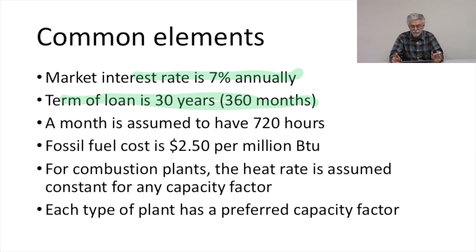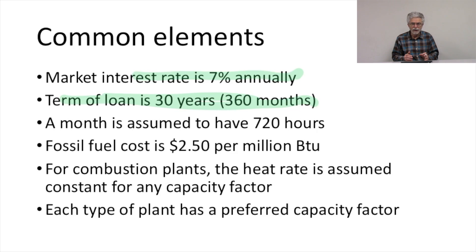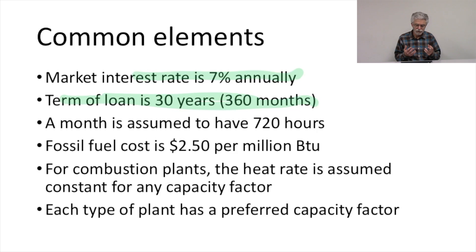A month is assumed to have 720 hours. Fossil fuel cost is $2.50 per million BTU. So essentially, coal and natural gas — all of our fossil fuel resources — if we think about them in terms of their energy content, they cost the same for a given energy content.